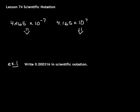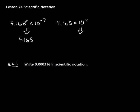We have this first number, 4.165, multiplied by 10 to the negative 7. Now, 10 to the negative 7 would be a really small number. So we're taking our number and multiplying it by something really small, below 1, so the number is actually going to get smaller. When the exponent is negative, the number is going to get smaller.